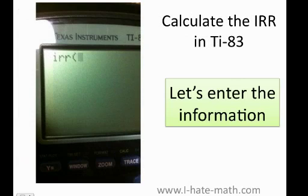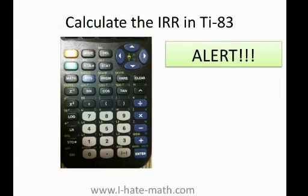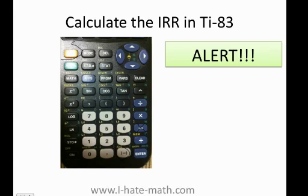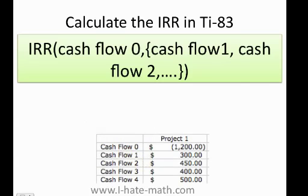Now we're going to go ahead and enter the information. But before I do that, I want to make sure you understand something. You will have negative numbers — you need to use this key; do not use this key. Also, you're going to have to add curly braces to the arguments. You press the key Second, and where the parenthesis is, that's where the curly brace key is going to be.